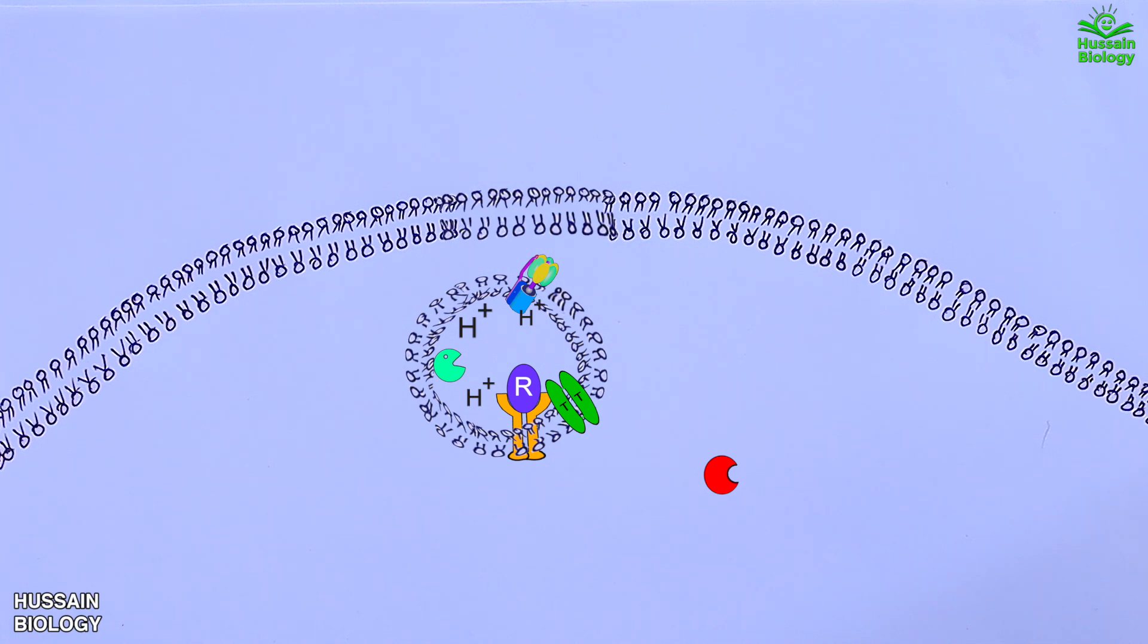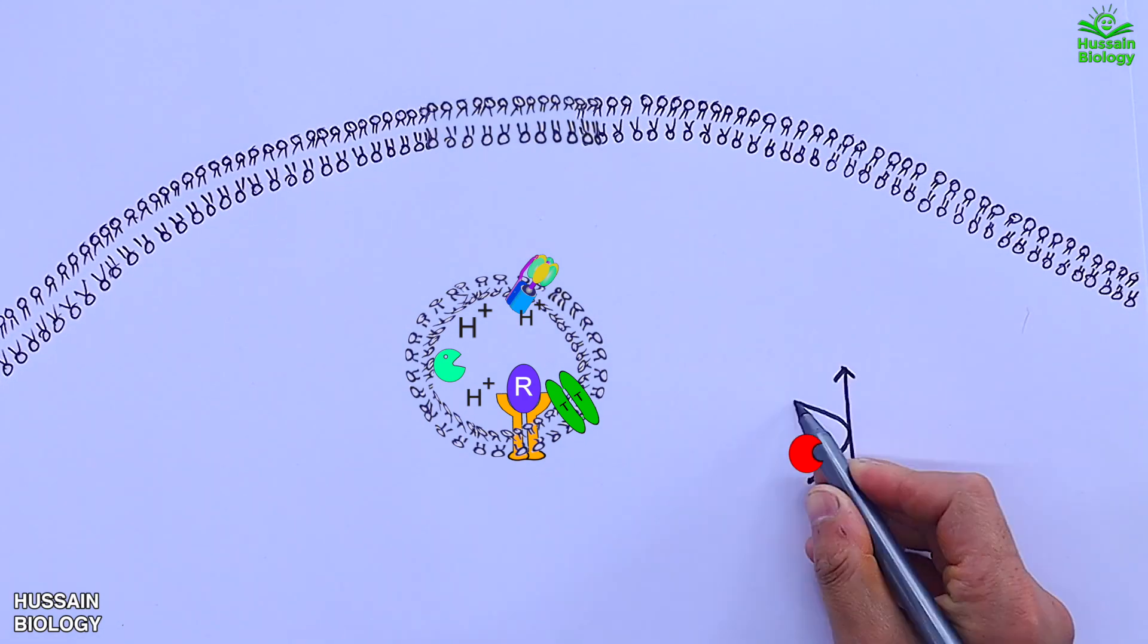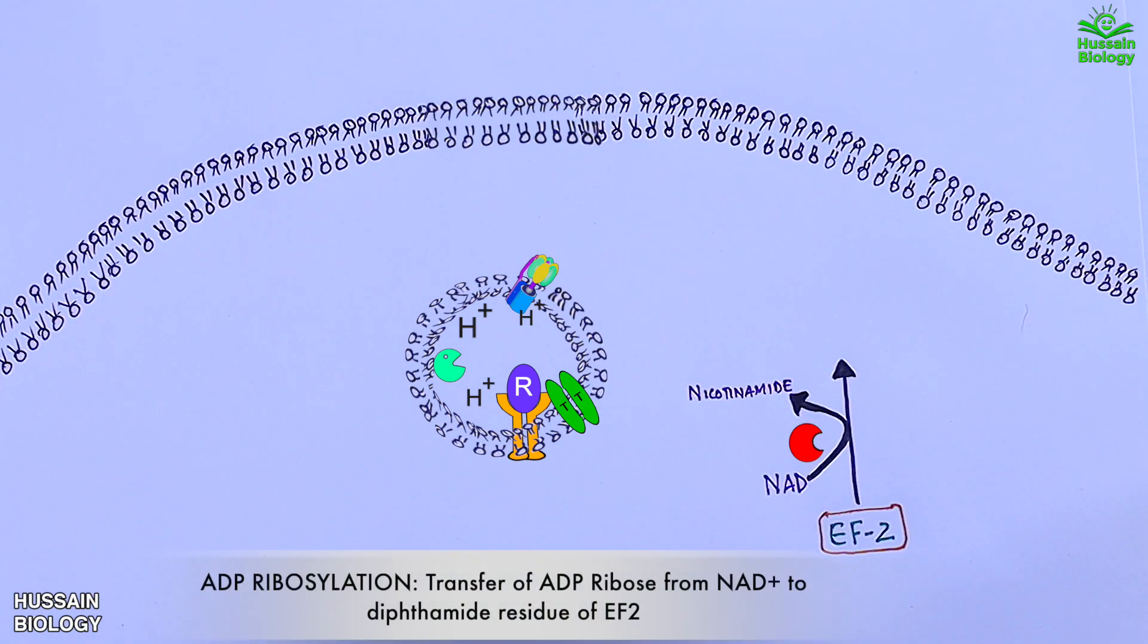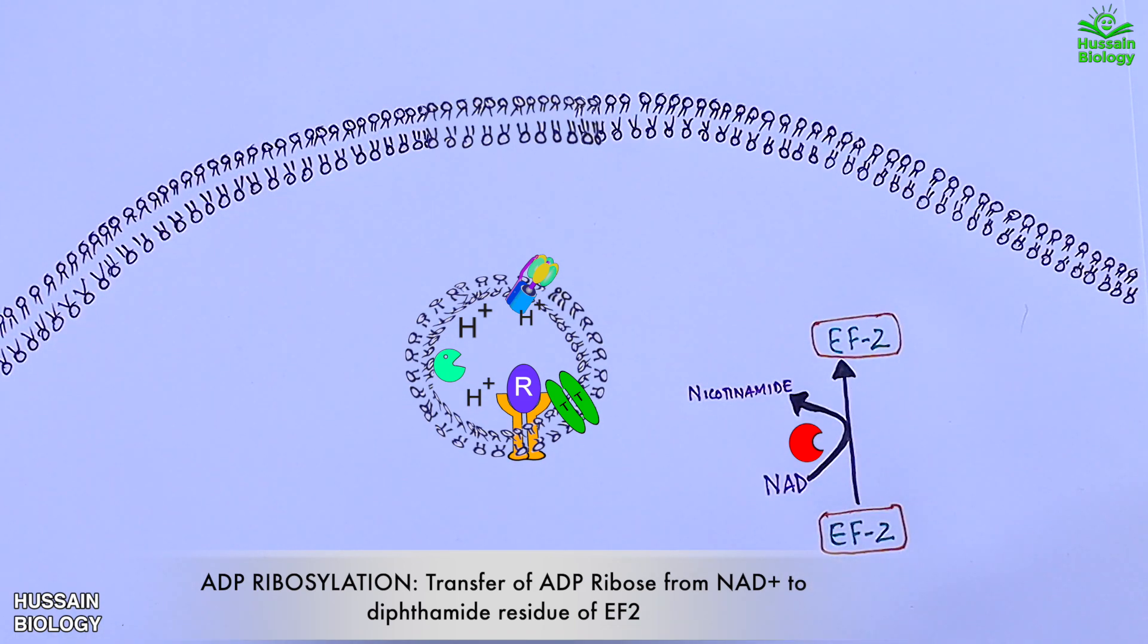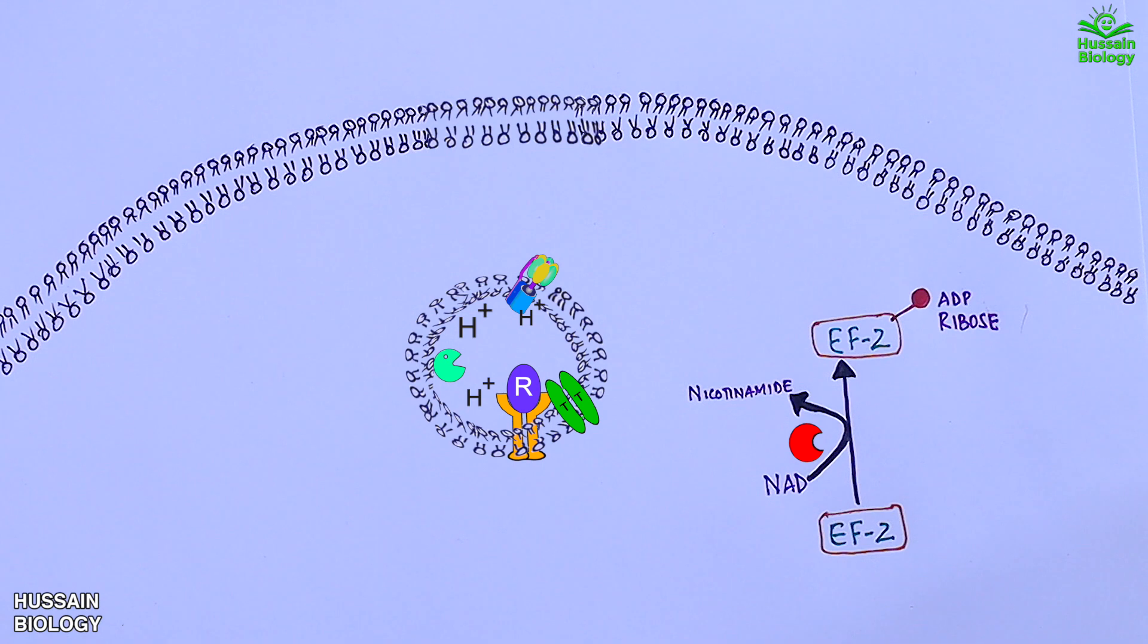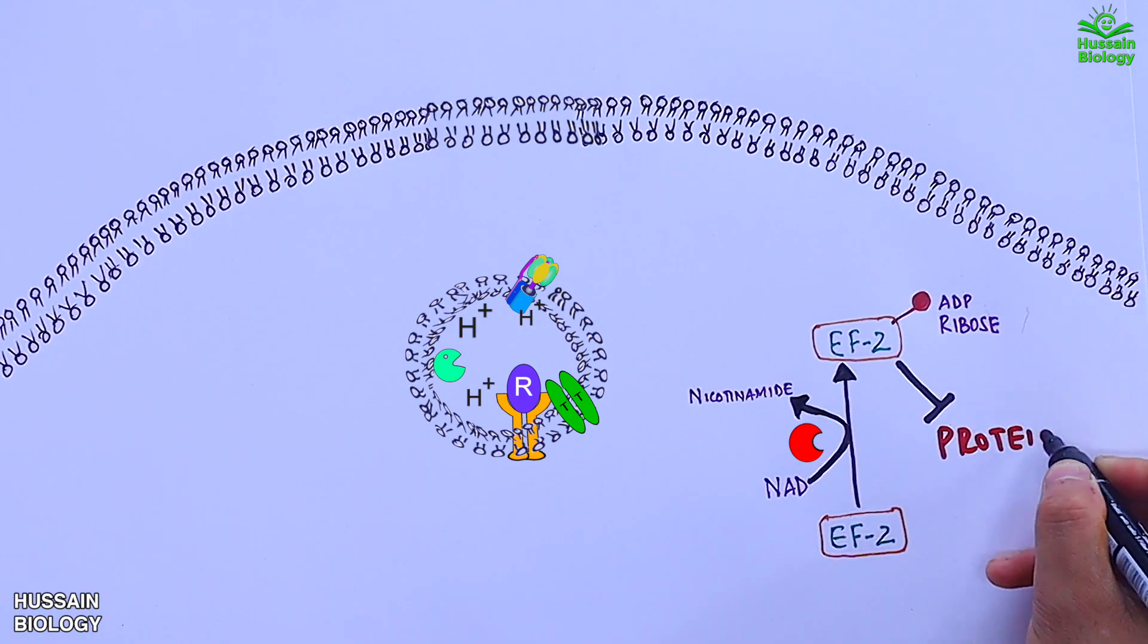Within the cytosol, the catalytic C domain of diphtheria toxin becomes active and mediates an enzymatic reaction with elongation factor 2 in the presence of NAD. This reaction is called ADP-ribosylation. We get the transfer of ADP-ribose from NAD to the diphthamide residue of elongation factor 2. By this way, elongation factor 2 is rendered useless and no longer works in protein synthesis, thereby halting protein synthesis in the host cell.